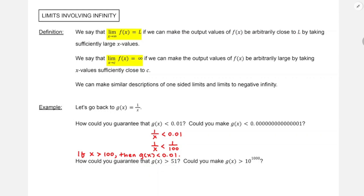Could you make g of x less than that very, very small number? Yes, you definitely could, because we can make 1 over x as small as we like by taking sufficiently large x values. Since that's just a yes or no question, I'm just going to answer yes.